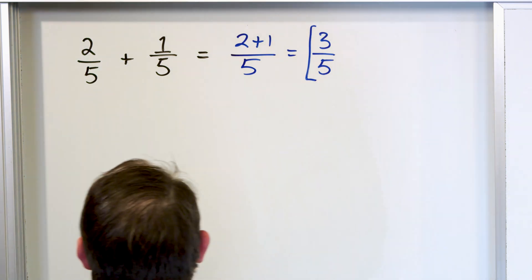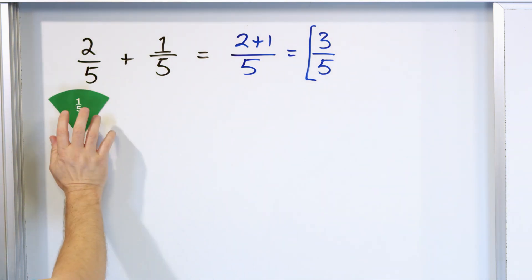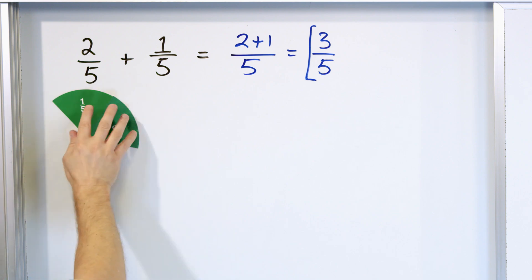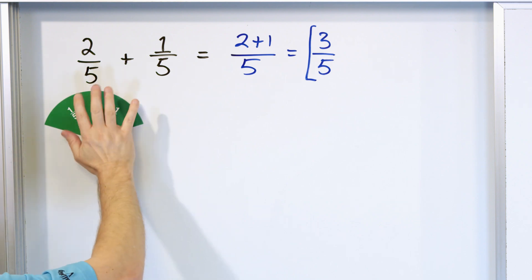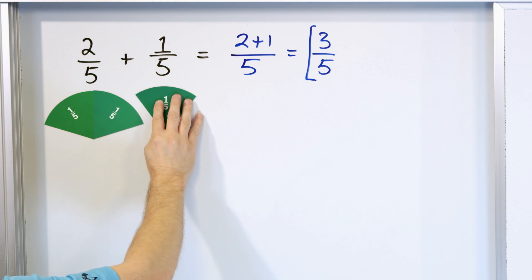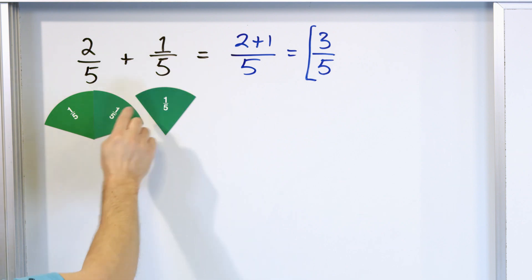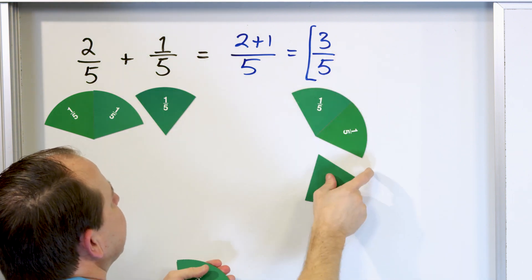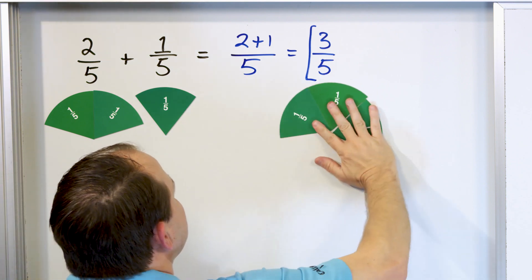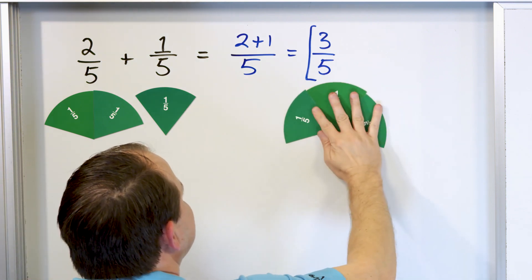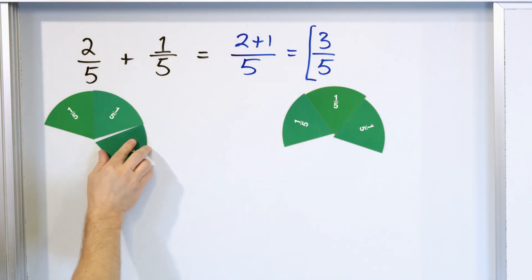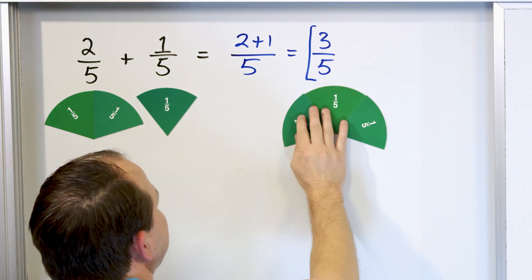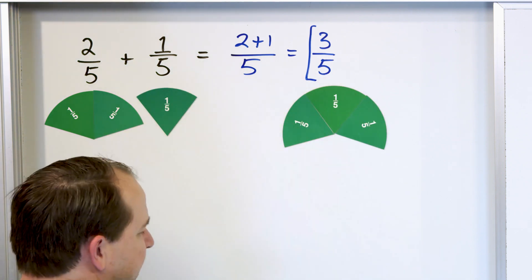So let's see if this makes any sense to us. Here I have my pizza wedges cut into fifths. There's 2 fifths — that's this amount of the pizza. And then I have 1 more fifth, and I'm adding them together, and I'm saying that the answer to this is 3 fifths, and that makes sense because if you start with this and you add this to it, of course, that's what you're going to get.